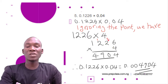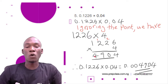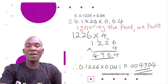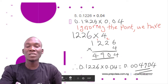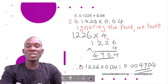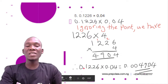Continuing: 4 × 2 = 8, plus 2 carried = 10, write 0 carry 1; 4 × 2 = 8, plus 1 carried = 9; 4 × 1 = 4. So 1226 × 4 = 4904. Now we have 4904 and need to return the decimal point. We count how many digits are after the decimal points in the original numbers.